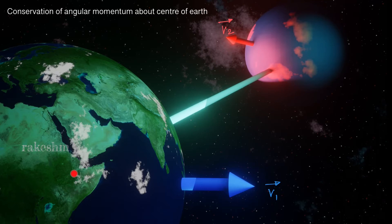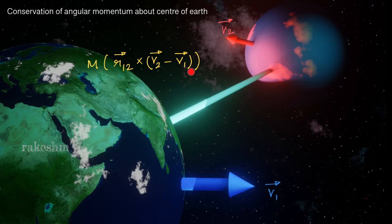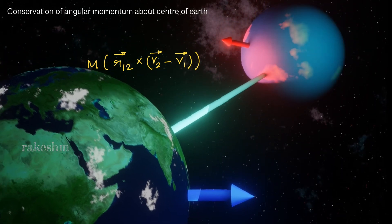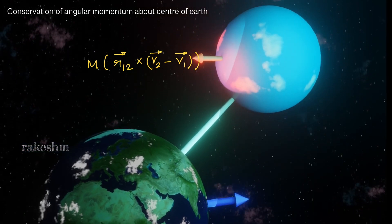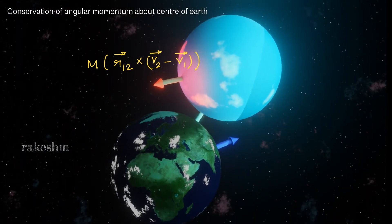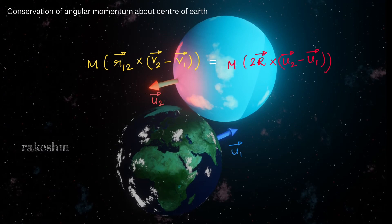The torque of this pseudoforce and the force acting on this planet about the center of earth is 0. So with respect to the center of earth, the angular momentum of this system remains conserved. The initial angular momentum about the center of earth is m into r12 bar cross v2 bar minus v1 bar, the velocity of this planet with respect to the earth. If the final velocities during collision are u1 bar and u2 bar, the final angular momentum will be m into 2r bar cross u2 bar minus u1 bar, where r bar is a vector from the center of earth to the center of this planet.